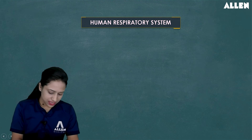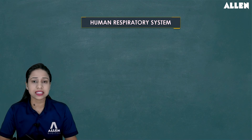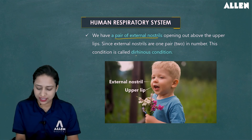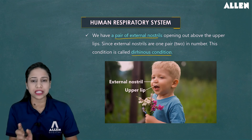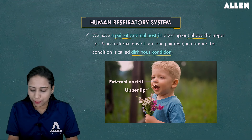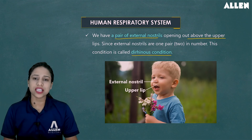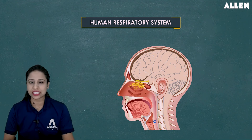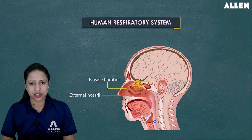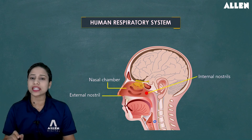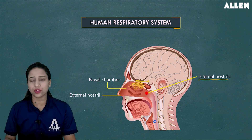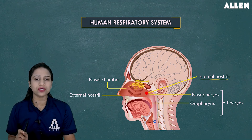Human respiratory system. This starts from the external nostrils. External nostrils are present in pairs — two external nostrils — that is why the condition is called the dirhynous condition. Di means two. These nostrils are located above the upper lip, and they open into the nasal chamber, which is the nasal passage. These nasal chambers open into the internal nostrils, which are internally open, called the internal nostrils.